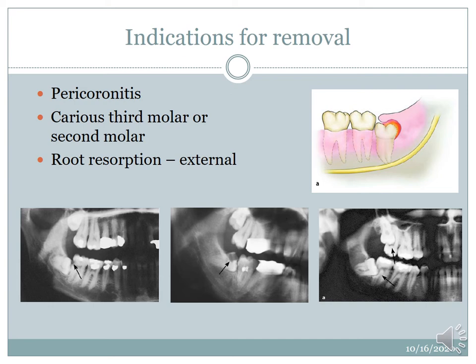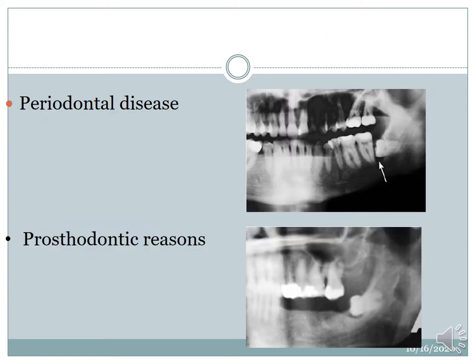These pictures show: the first one shows caries, the second one shows caries along with a periapical lesion, whereas the third one shows root resorption — external resorption due to an impacted tooth overriding the second molar. The periodontal disease: you can see a lesion distal to the second molar caused by food accumulation which breached the lamina dura and entered the basal aspect of the second molar. For prosthetic reasons, you can see an isolated third molar which hinders a patient wanting a complete denture reconstruction on that arch.